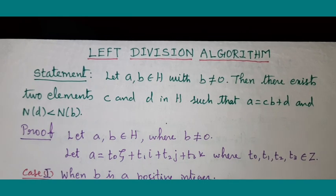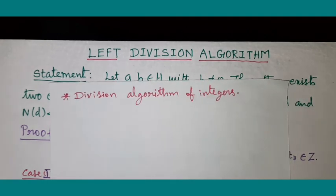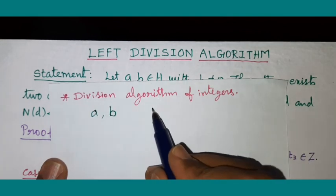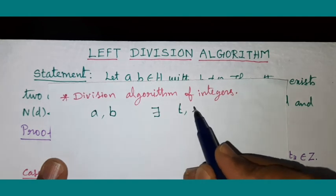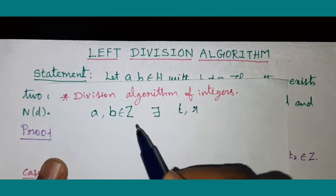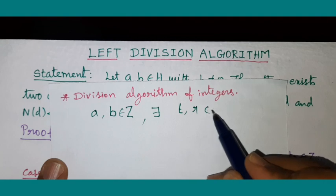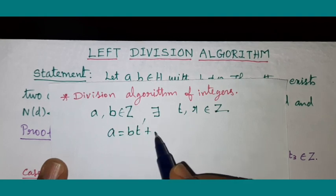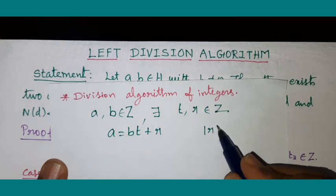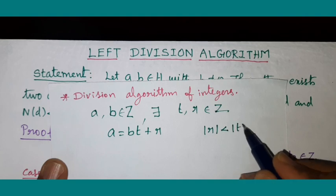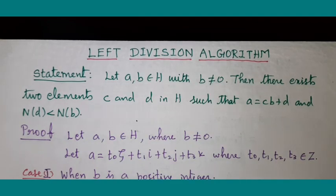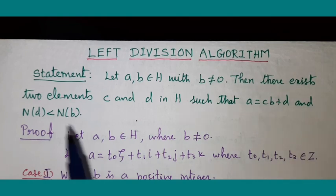Before going to the proof, we recall the division algorithm for integers, which says: if A and B are two integers, then we can always find two integers T and R in Z such that A can always be written as Bt plus R, where the modulus of R is less than the modulus of B. This is the division algorithm in the case of integers. The similar thing we have here: A is equal to CB plus D and N(D) is less than N(B).